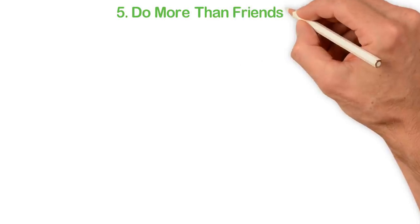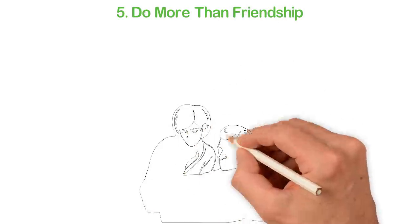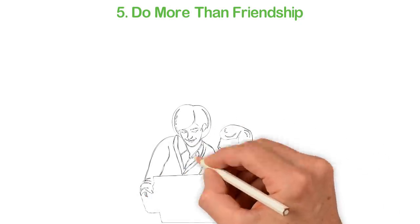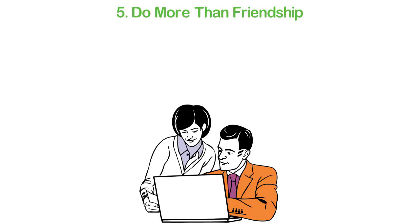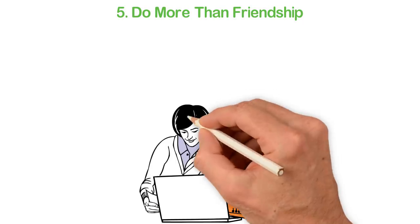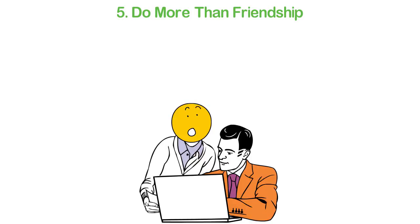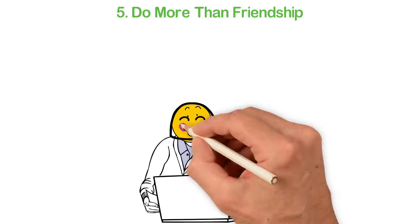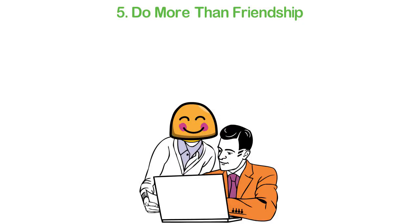5. Do more than friendship. There should be different kinds of relationships in your life. Your friends, your business partners or colleagues at work, people who are older than you and people who are younger than you. Because different age groups and different professions and temperaments have different approach and ideas about life, the more diverse your connection is, the faster you can grow.